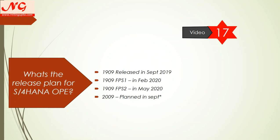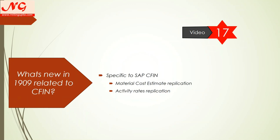SAP enhanced universal allocation forms and group reporting functionalities in FPS1, and enhanced some legal reporting in FPS2. If you have any questions related to that, just drop a comment in the video. Now, what is new in 1909 overall?